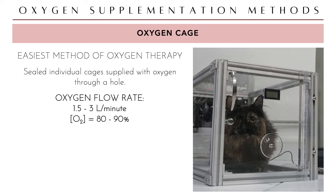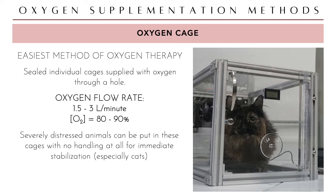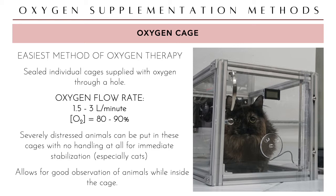The oxygen cage allows good observation of animals while inside because no handling is necessary, unlike the oxygen hood which requires assembly. Patients — particularly cardiac patients — must simply be placed in the cage and stabilized without manipulation. Opening the cage door immediately drops O2 concentration to room air level, so minimizing door opening is essential.